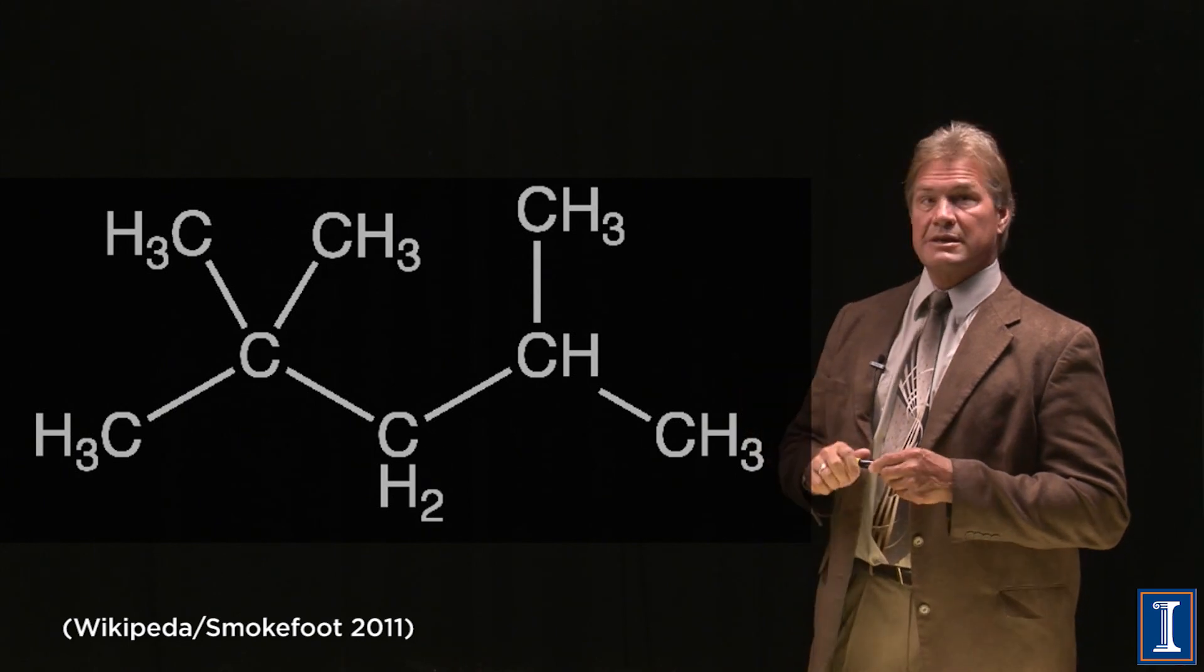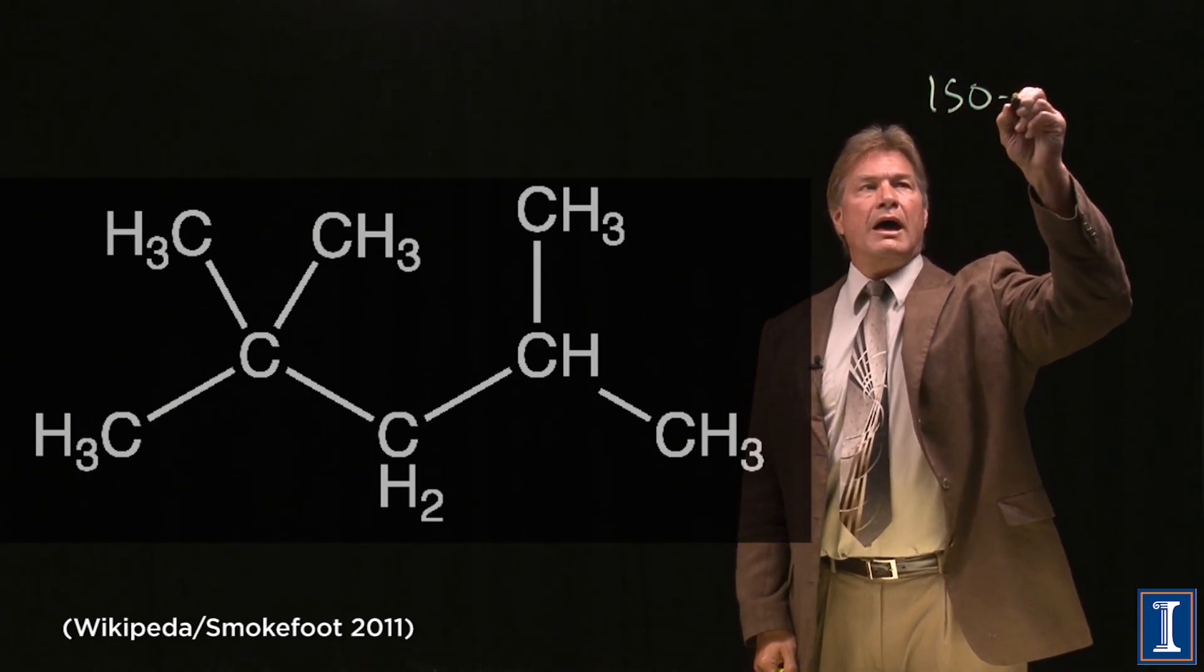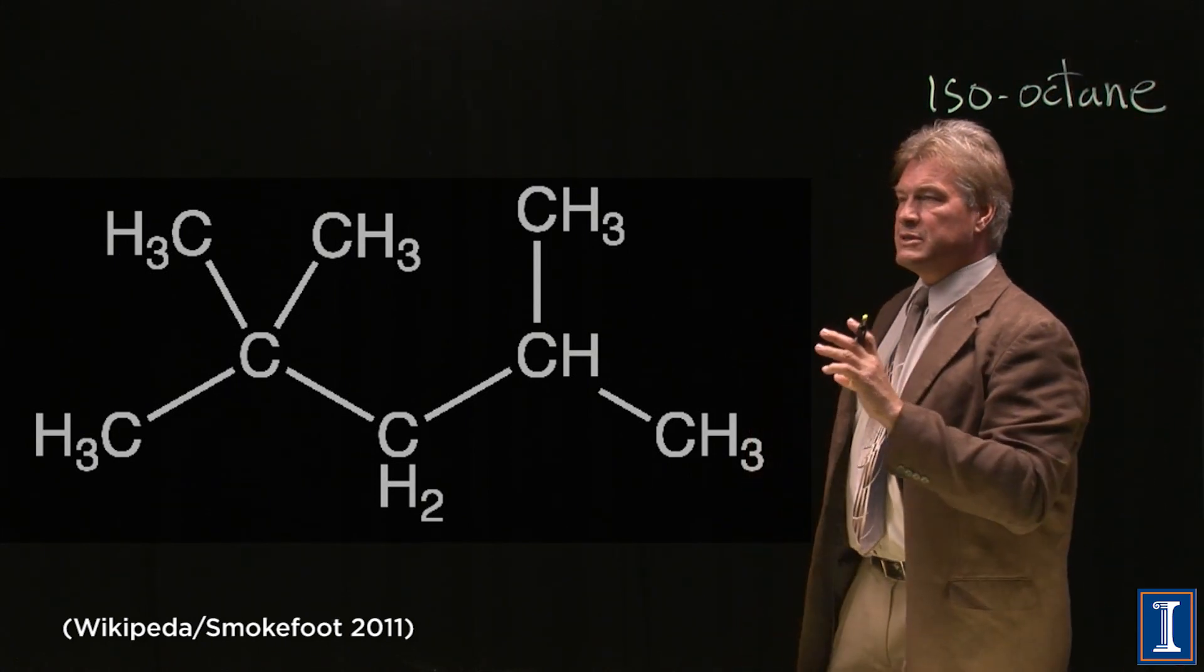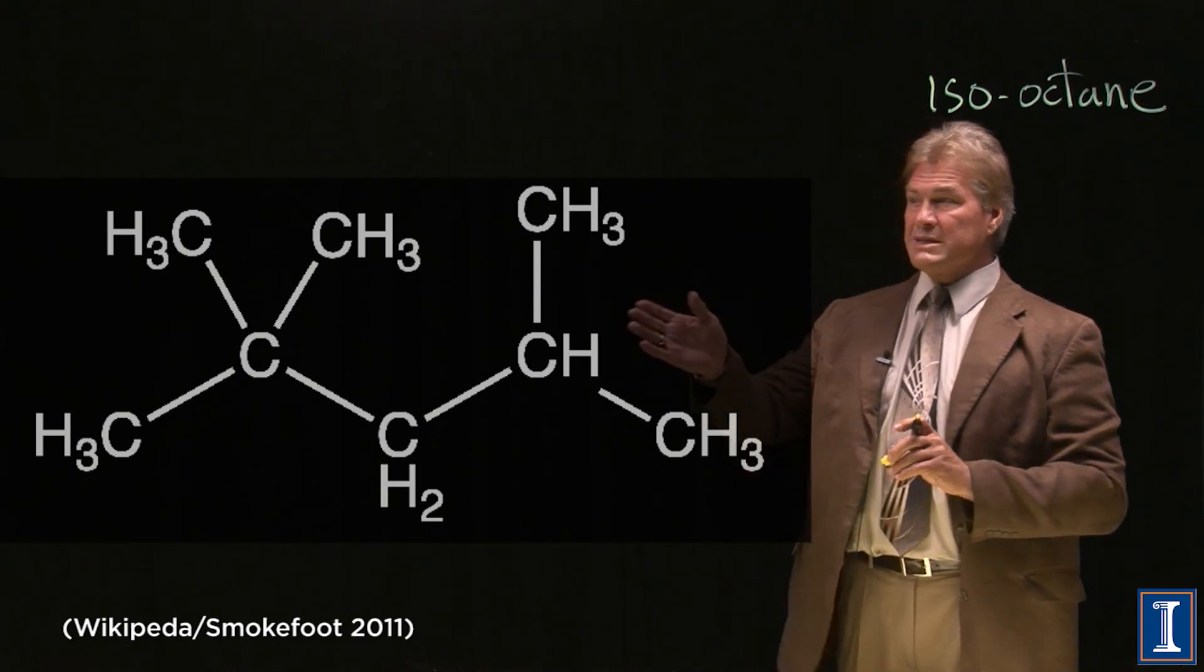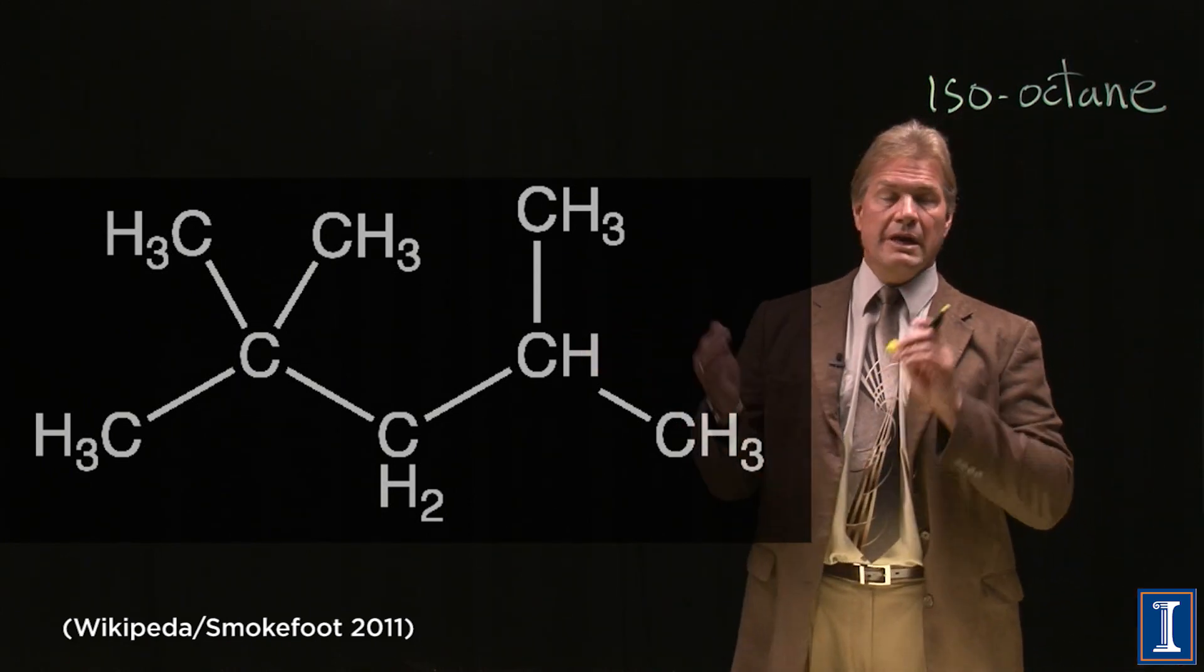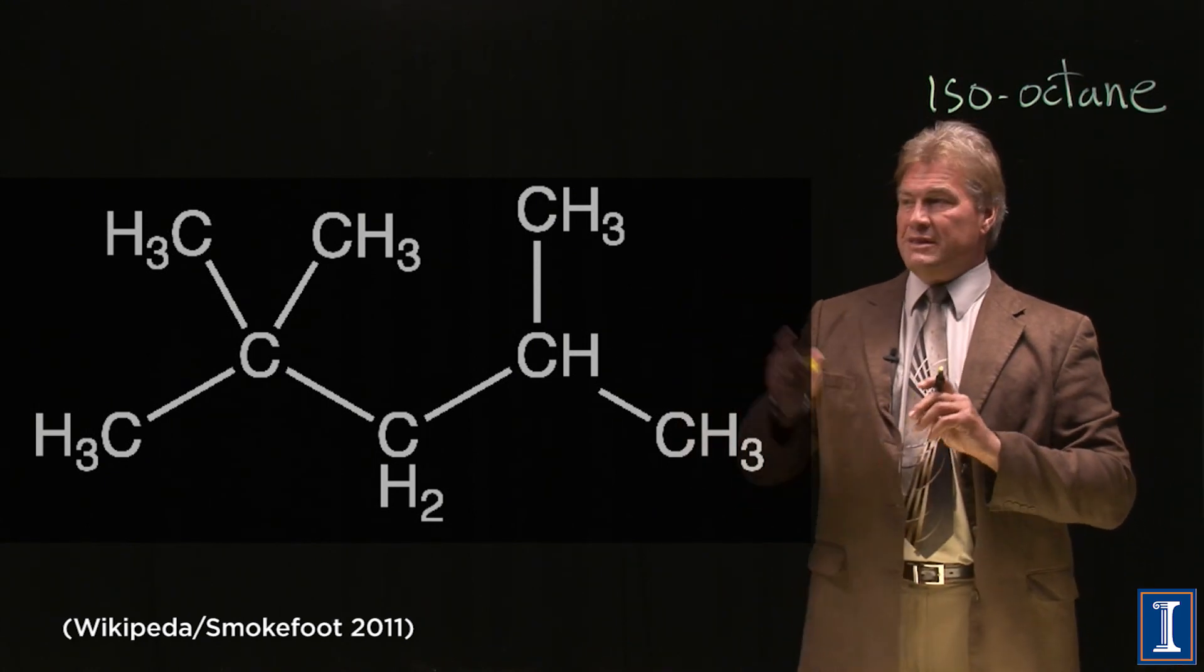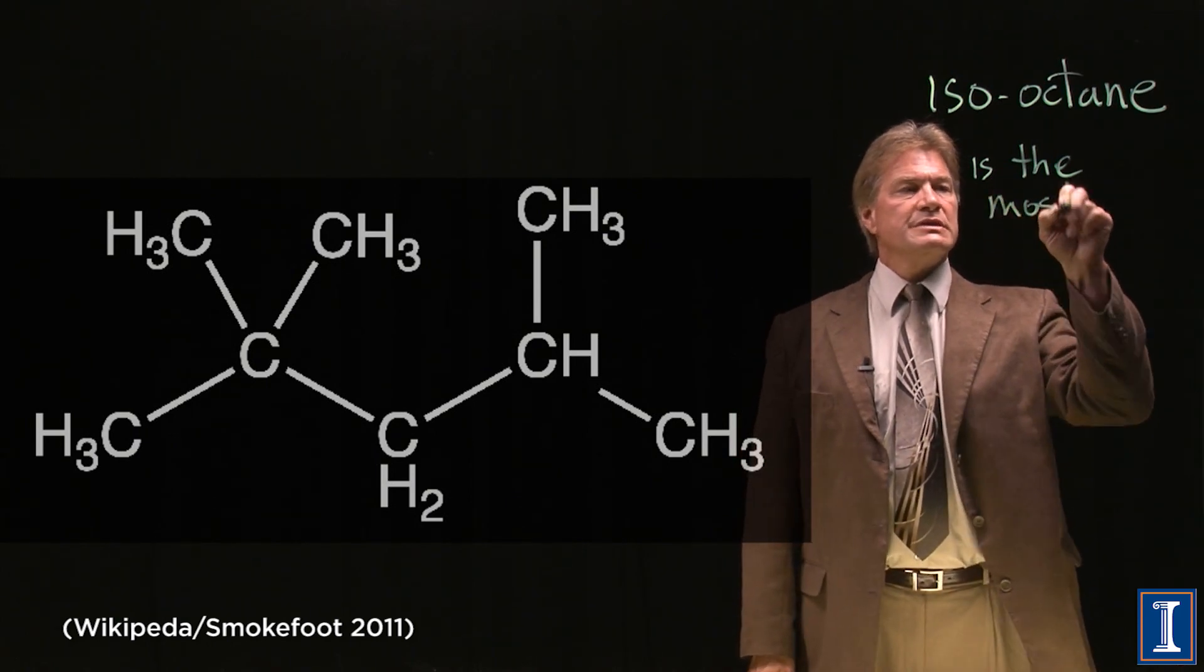You see, octane rating has to do with this chemical. This is called iso-octane and it's a particular chain of eight hydrocarbons, very cross-linked. You can still see it's octane, you got eight hydrocarbons. It doesn't form some loop, it's not an aromatic, but this iso-octane is the most stable octane isomer.